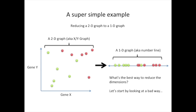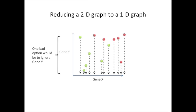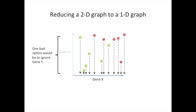What's the best way to reduce the dimensions? Well, to answer that, let's start by looking at a bad way and understanding what its flaws are. One bad option would be to ignore gene Y. And if we did that, we would just project the data down onto the X-axis. This is bad because it ignores the useful information that gene Y provides. Projecting the genes onto the Y-axis, i.e., ignoring the gene X, isn't any better.